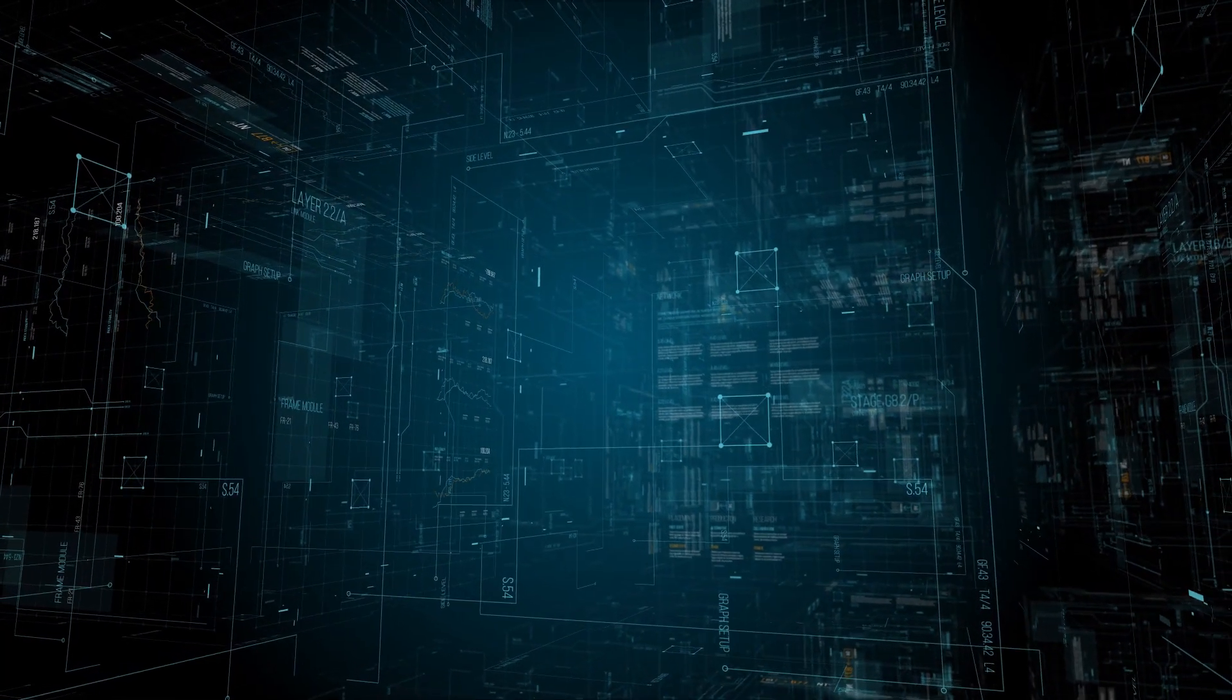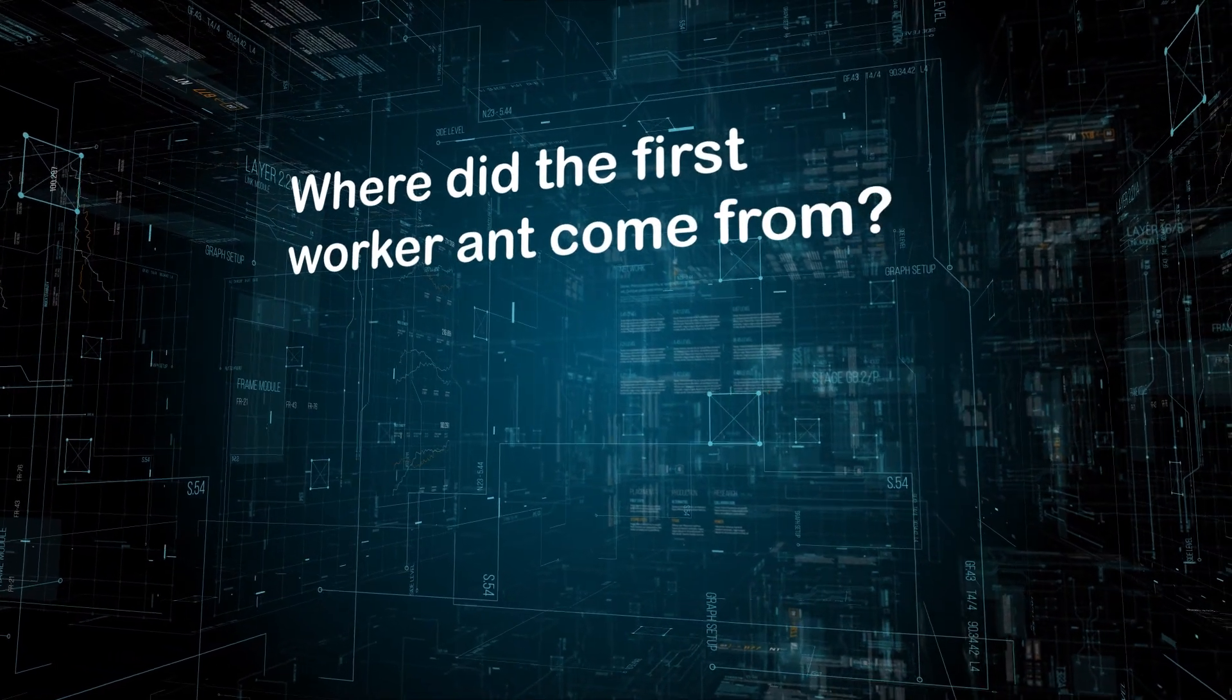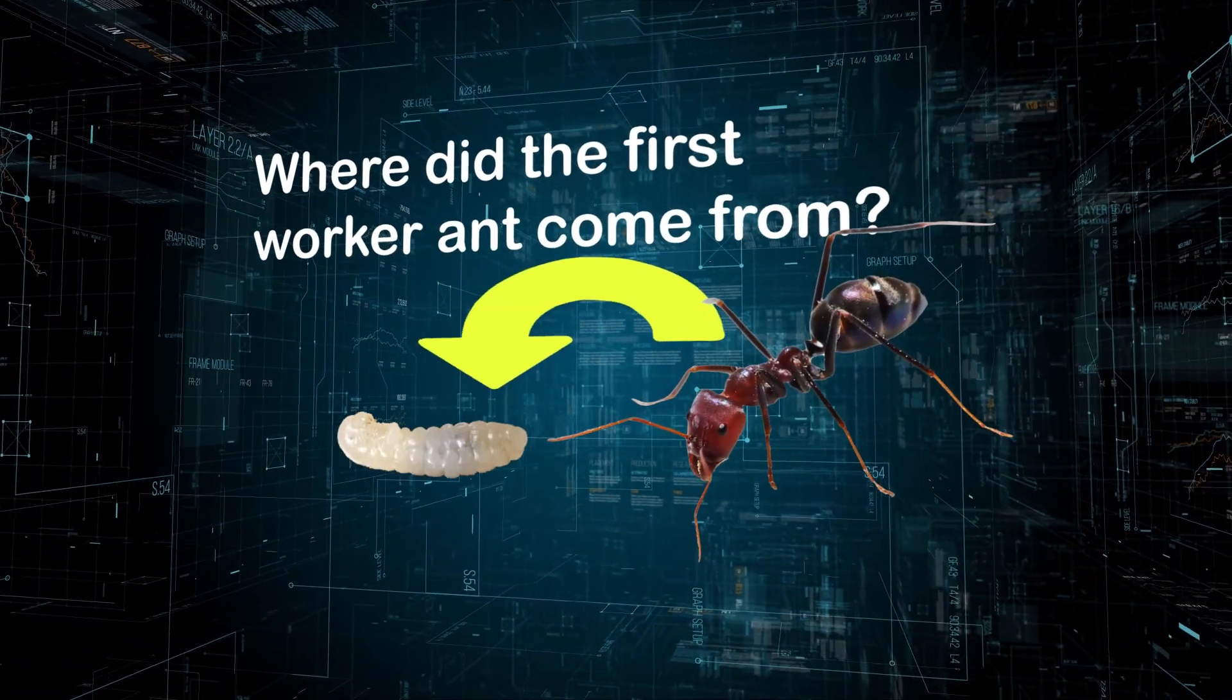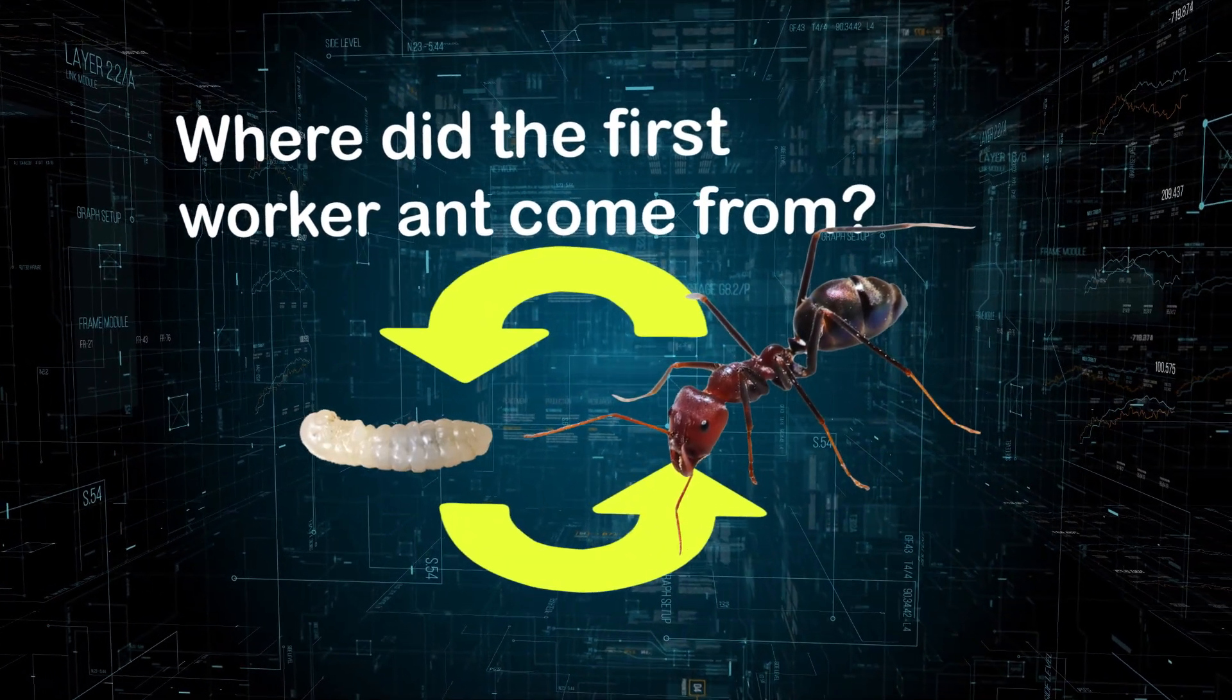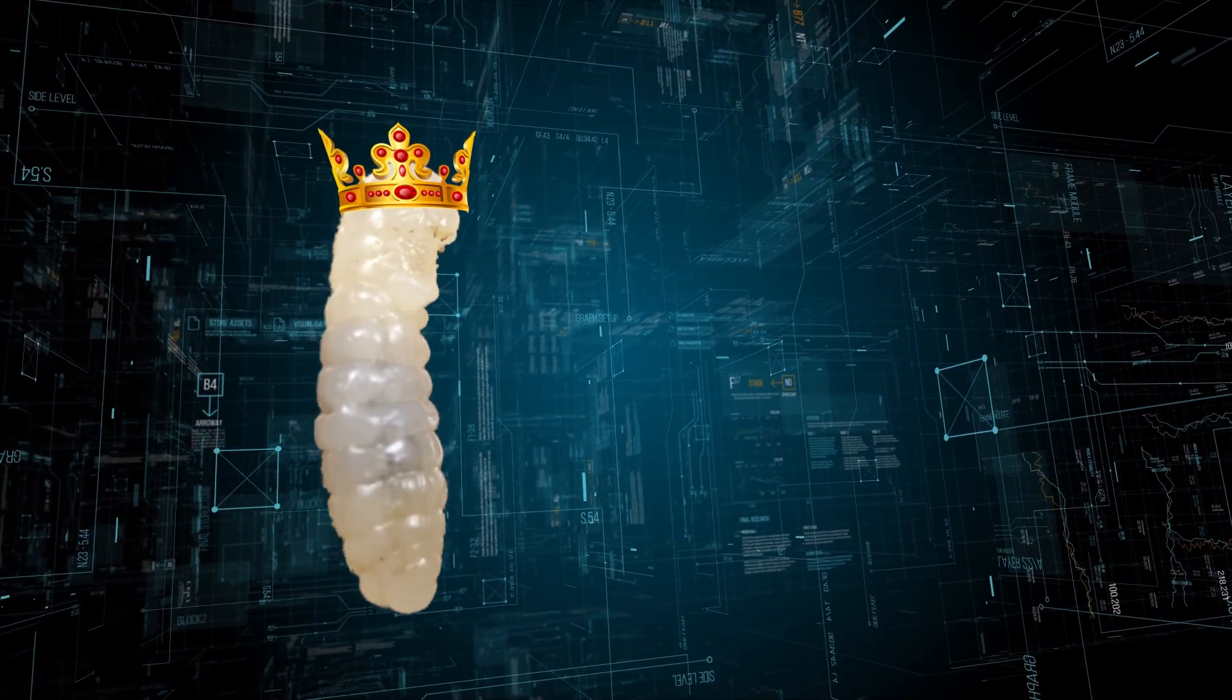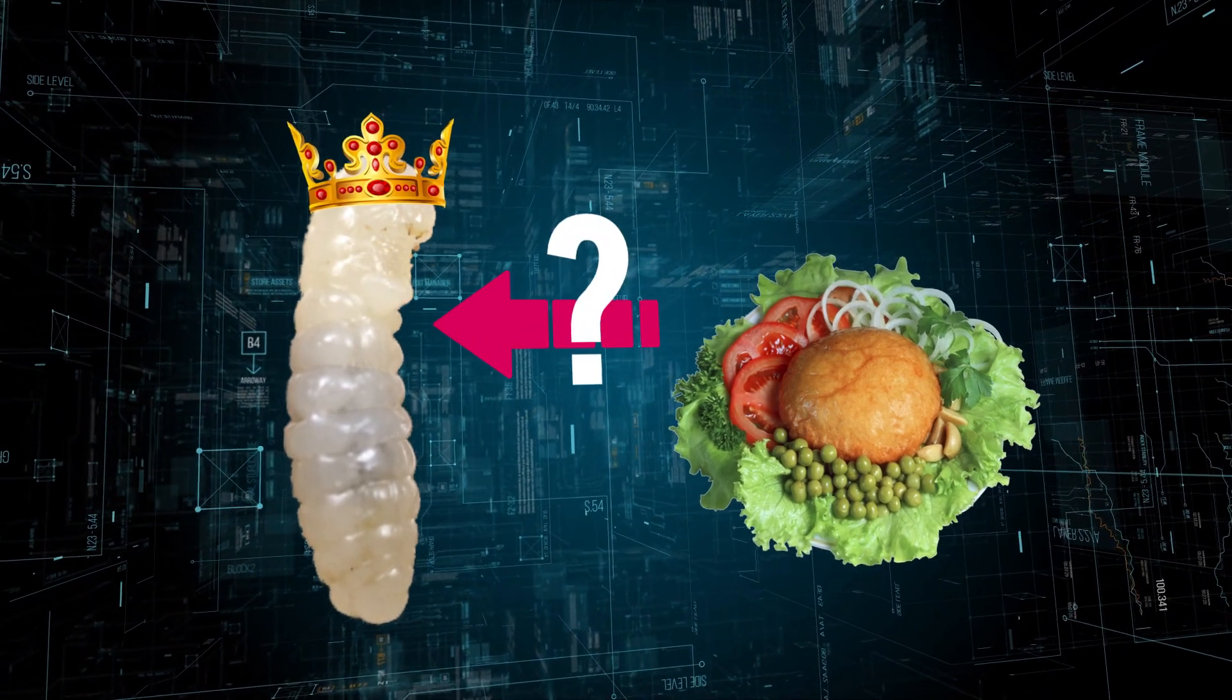And the real question is, where did the first worker ant come from that was needed to feed an egg so that it could grow into the first worker ant? From the queen? But who fed the queen while she was an egg?